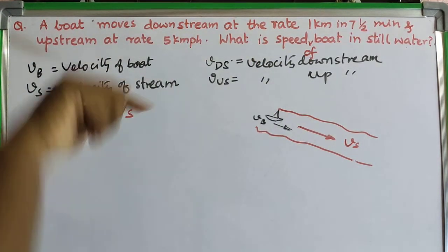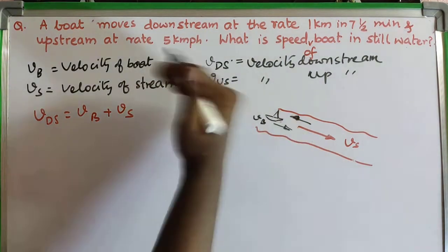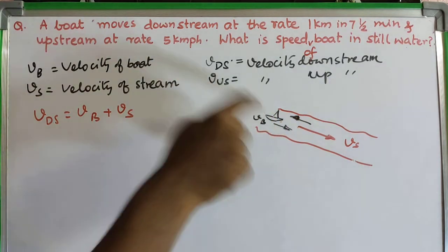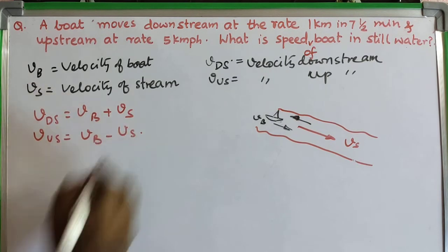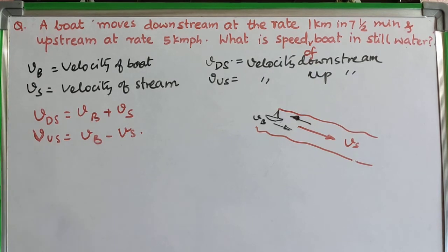When the boat moves along with the current, both velocities add up and the boat moves faster — that is VDS. When the boat moves in the direction opposite to the stream, the stream opposes the boat's motion, so the velocity upstream equals VB minus Vs. Moving upstream means the stream opposes the motion, decreasing the effective speed.